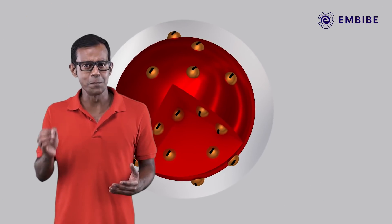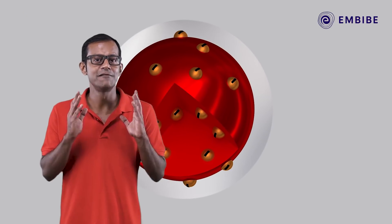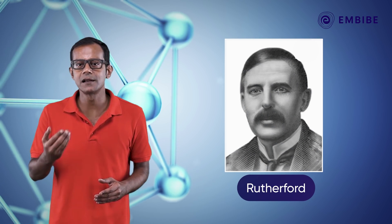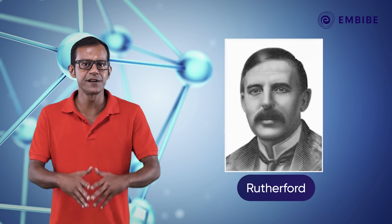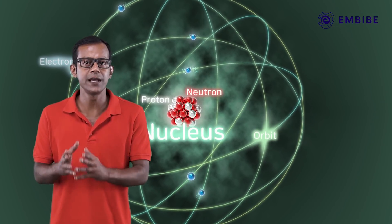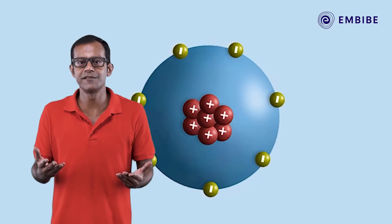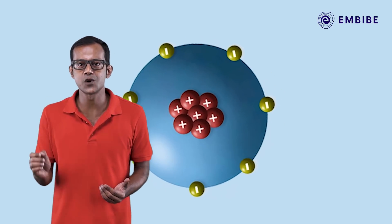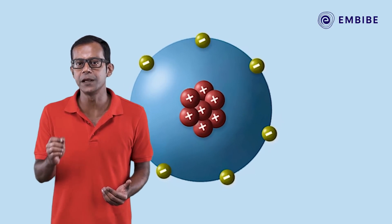You now know that Thompson's atomic model failed. Then it was the turn of scientist Rutherford who proposed an atomic model which was different to the plum pudding model. Let us learn in our upcoming videos about how Rutherford overcame the drawbacks of the plum pudding model.